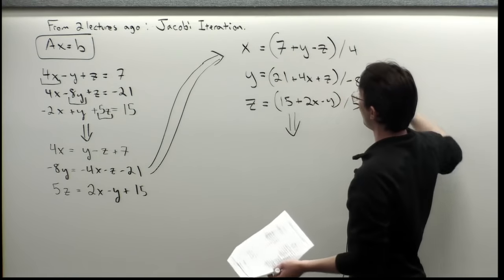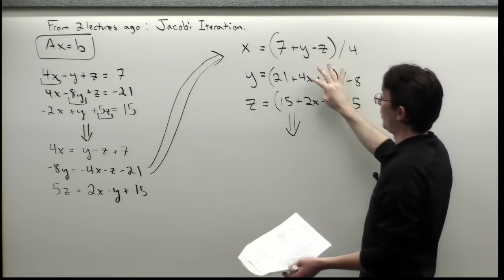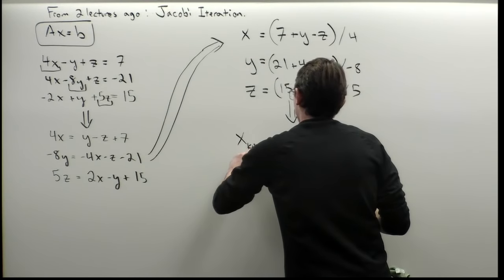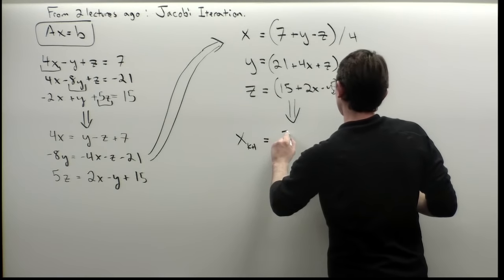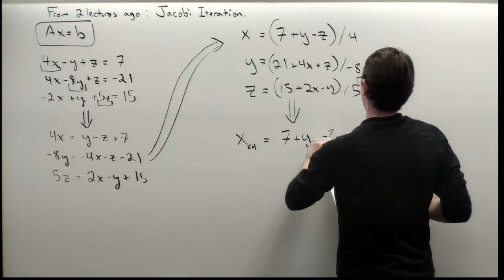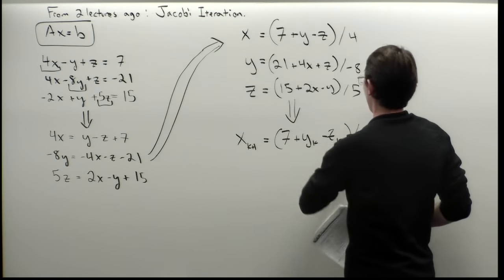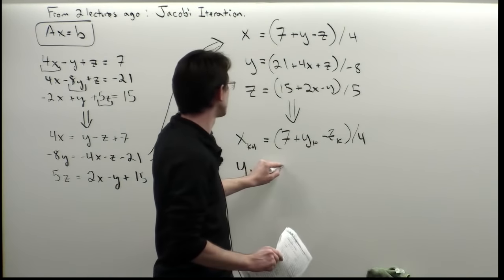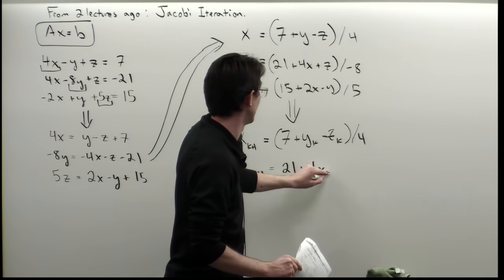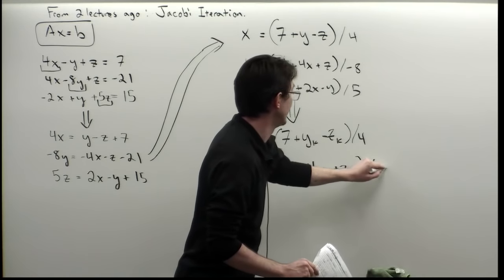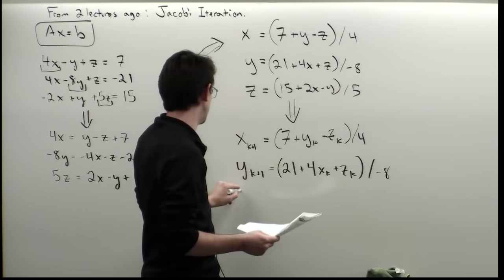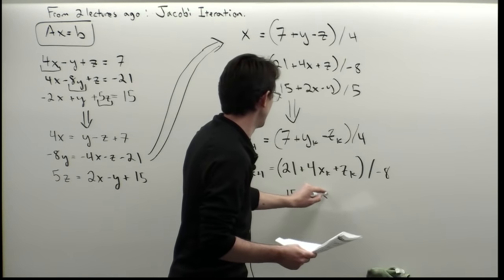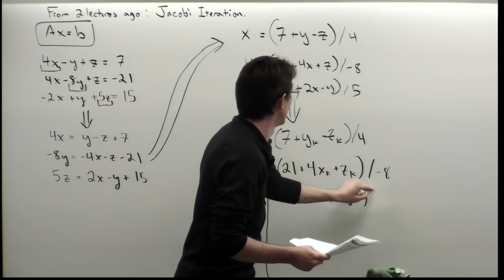After dividing by the diagonal coefficients, the Jacobi iteration becomes: x_{k+1} equals (7 plus y_k minus z_k) divided by 4; y_{k+1} equals (21 plus 4x_k plus z_k) divided by minus 8; and z_{k+1} equals (15 plus 2x_k minus y_k) divided by 5. This gives us a rule: if we know x, y, and z at some iteration, we can find them at the next.